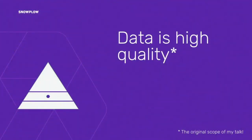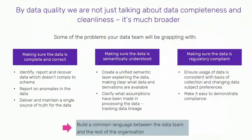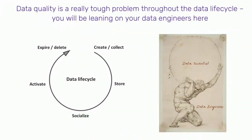The first real problem is data quality. Data quality is a very tough problem throughout the whole data lifecycle. You're going to be leaning very heavily on your data engineers to help with this. At Snowplow, we think about the data lifecycle as creating, collecting, storing, socializing, and activating data. And in the new, more privacy-conscious world, we're also looking at expiry, deletion, and control of access.